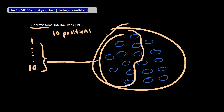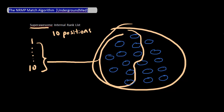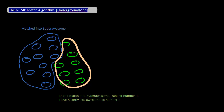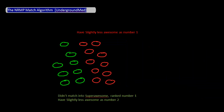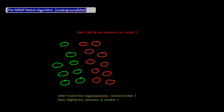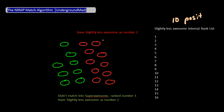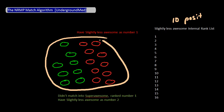Part of that is pretty intuitive, but the part that's not is how to define that pool of students. What happens to those students that rank Super Awesome number one but didn't match there? Let's assume that all the students who didn't match into Super Awesome had Slightly Less Awesome as their number two. So all of those students who didn't match into their number one choice, but had Slightly Less Awesome as their number two, will then pool together with all students who had Slightly Less Awesome as their number one. Let's say that Slightly Less Awesome also has ten positions open and that their internal rank list looks like this. Out of this pool of students, the ten students that Slightly Less Awesome ranks the highest on their list will match into Slightly Less Awesome.